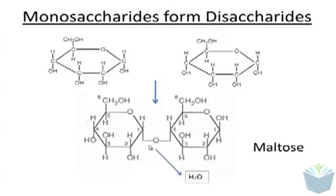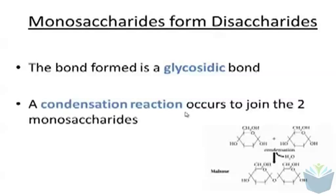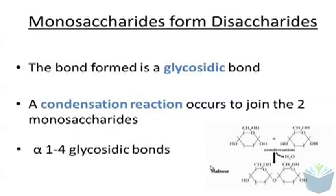This molecule is the disaccharide maltose. The bond produced is called a glycosidic bond — 'glyco' is similar sounding to glycogen, which is a polysaccharide we'll look at in later videos. The bond formed between two monosaccharides is called a glycosidic bond, and it is formed via a condensation reaction because water is produced. We sometimes refer to this, particularly in the example of maltose, as a one-four glycosidic bond. This is due to the carbons being joined: carbon one on the left-hand glucose and carbon four on the other, hence the one-four glycosidic bond.